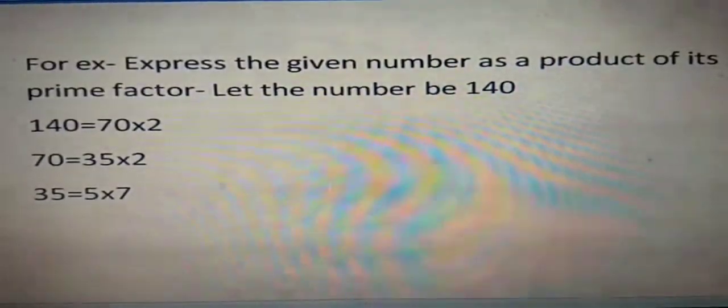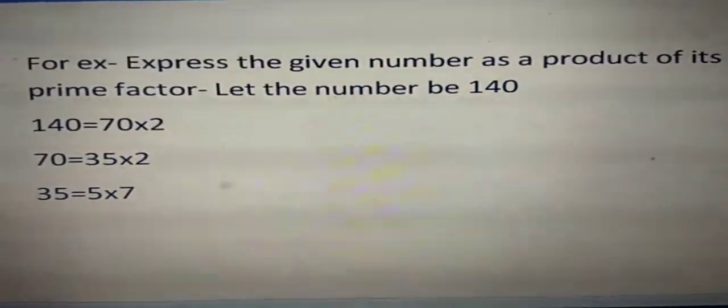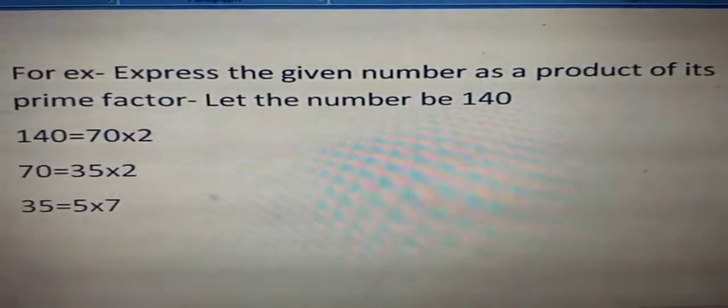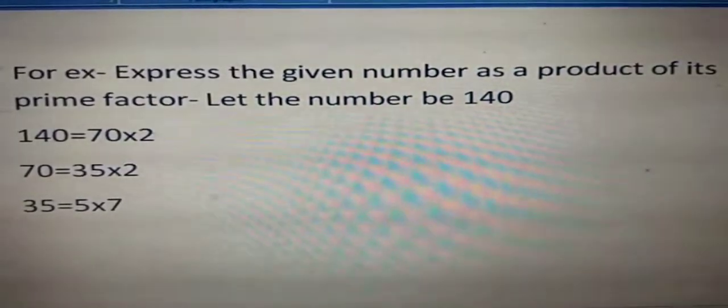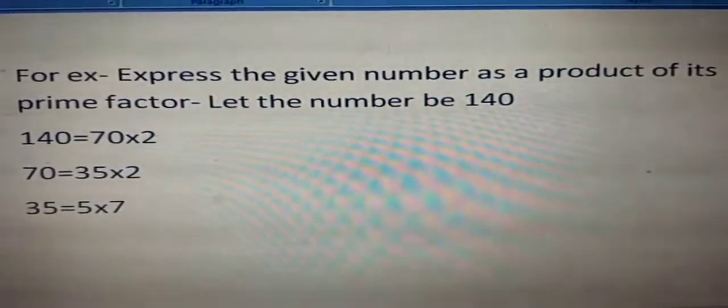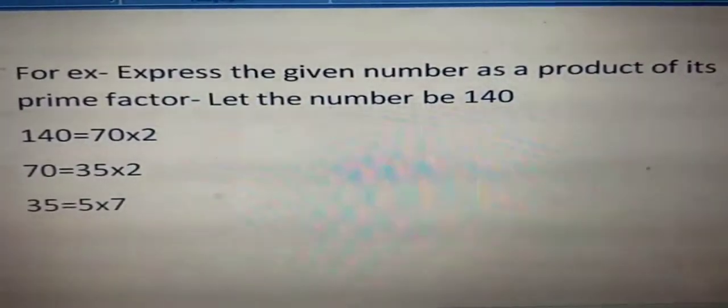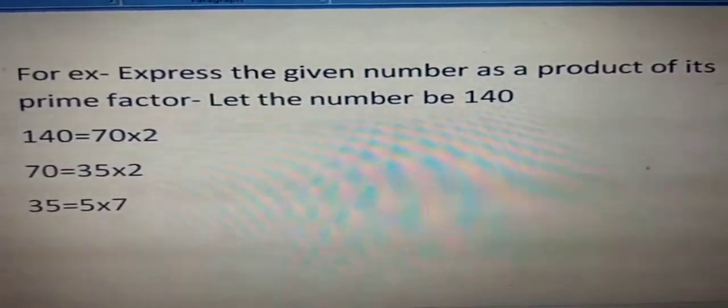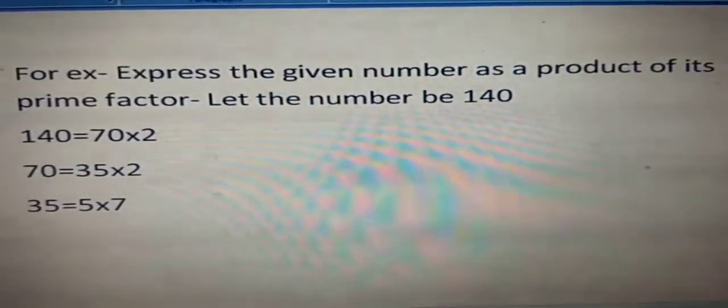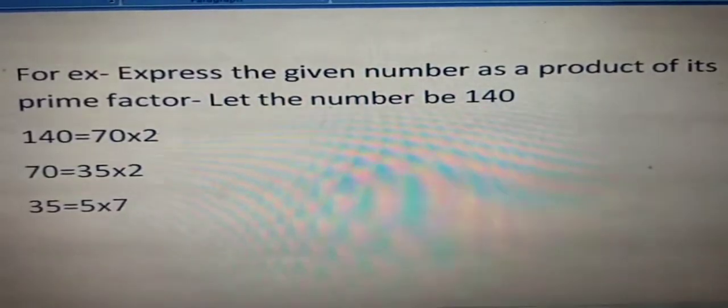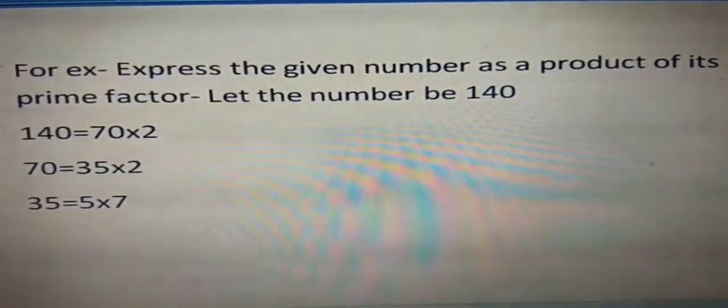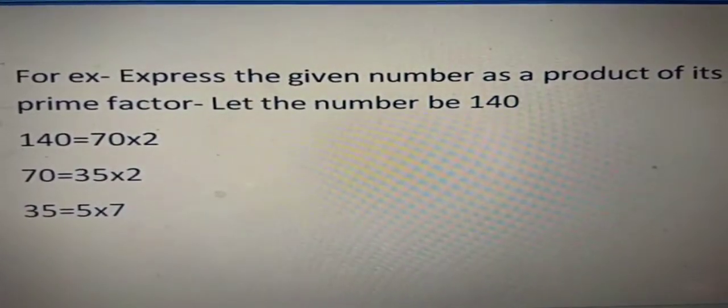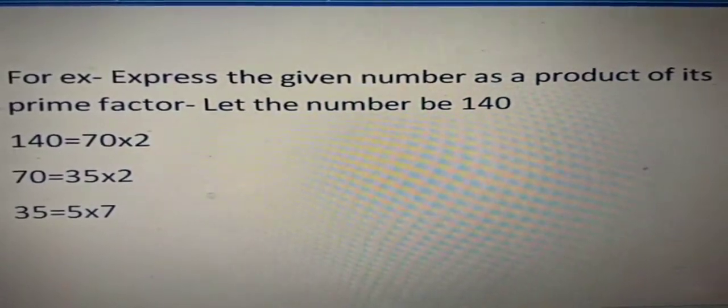For this I am showing you one more example. Express the given number as a product of its prime factors. Let the number be 140. This number we can explain by factor tree method. 140 can be broken up into two numbers, that is 70 times 2. 70 can be further factorized into 35 times 2. 35 can further be factorized as 5 times 7. In this way you can solve the questions of Euclid's Division Lemma and Fundamental Theorem of Arithmetic.